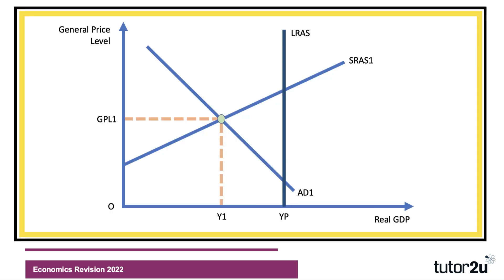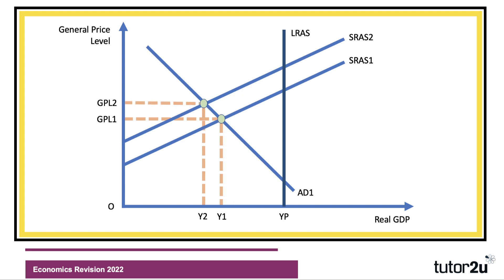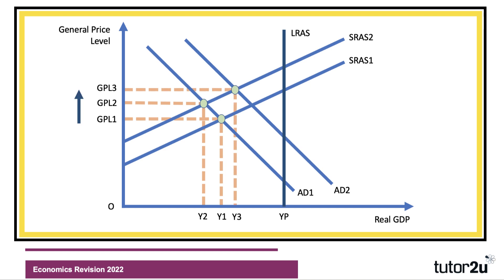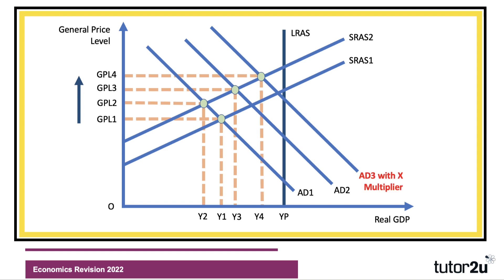At some point in the answer you'll want to use a diagram — I'll use AD/AS. In theory, a currency depreciation increases the price of imports, causing aggregate supply to shift left, driving the price level up and real GDP down. But a fall in the currency also stimulates exports, so AD might shift from AD1 to AD2. There could also be an export multiplier effect, shifting AD2 to AD3, giving a stronger growth effect but perhaps a bit more inflation.